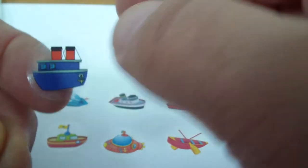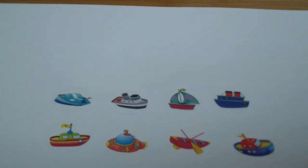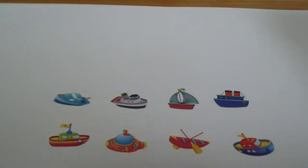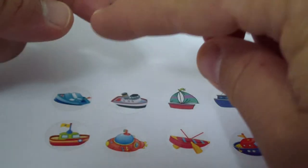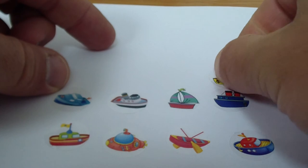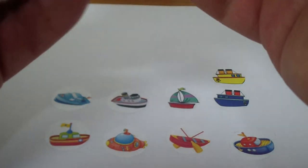So Jimmy's here. Now we have a yellow steamboat. That was red, this is yellow, this is blue, and we have...